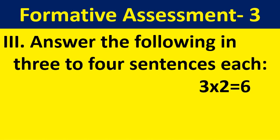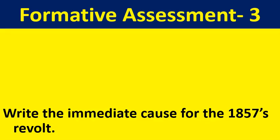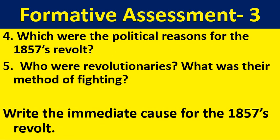Answer the following in 3 to 4 sentences each. Question 4: Which were the political reasons for the 1857 revolt? Question 5: Who were the revolutionaries? What was their method of fighting? Or: Write the immediate cause for the 1857 revolt. This is an optional question. Totally you have 6 marks — 2 into 3 is 6.